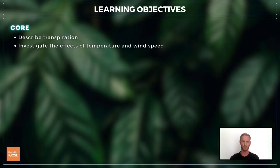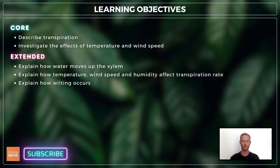For topic 8.3, you need to understand the term transpiration and investigate the effects of temperature and wind speed on transpiration rate. For extended, you also need to explain the mechanism by which water moves upwards in the xylem, explain how temperature, wind speed and humidity affect transpiration rate, and explain how wilting occurs.